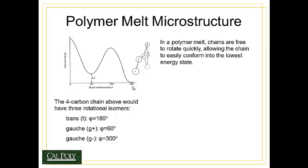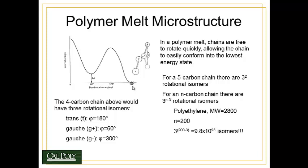Because the chains are easily able to rotate, they will generally conform to the lowest possible energy state. For five carbon atom chains there are 3² or nine rotational isomers possible, because of the possibility for trans and two gauche conditions. For n carbon chains there are 3^(n−3) rotational isomers possible. For example, polyethylene with a relatively low molecular weight of only 2800 grams per mole has about 200 carbon atoms in a chain, giving 3^(200−3) = 9.8×10⁹³ isomers.